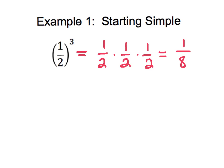With the quotient rule, we think about that power of three applying to everything in our numerator — so one to the third power — and everything in our denominator — so also two to the third power — which still gives me one-eighth. It's just two different ways of thinking about it.